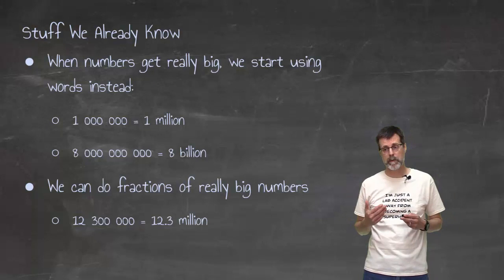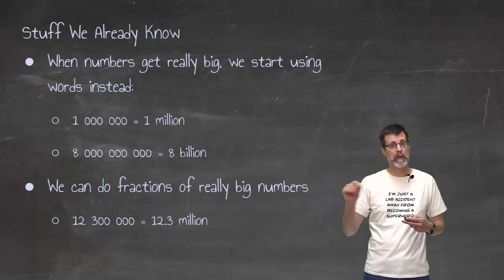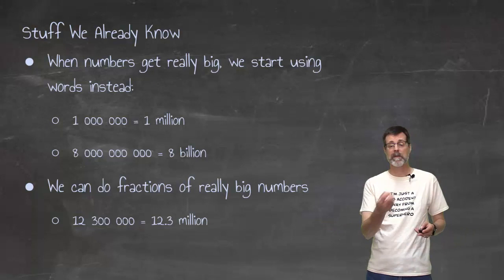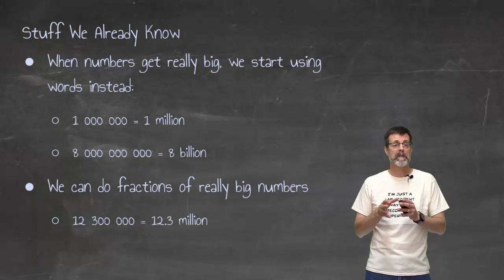Now what I'm thinking to understand, and this is something that you are familiar with, is when we start talking about really large numbers, we start to flip from using the actual numbers written down and we use words to describe them. So instead of writing all the zeros, I would just say 8 billion. And then we can do fractions of those things. So I can have 12.3 million, I could have 8.7 billion. And those numbers that we toss around sometimes feel very familiar to us. Here's the thing. We're going to do that.